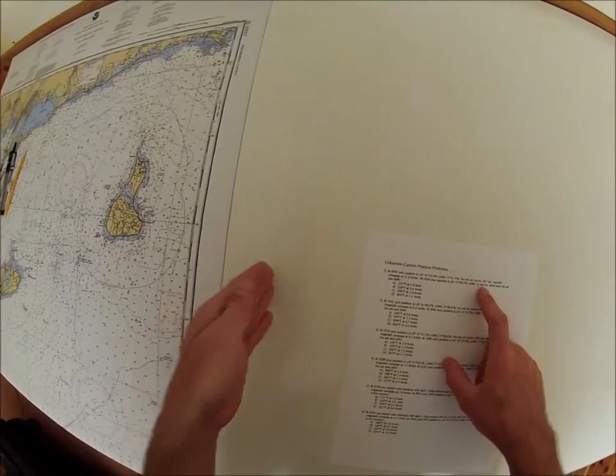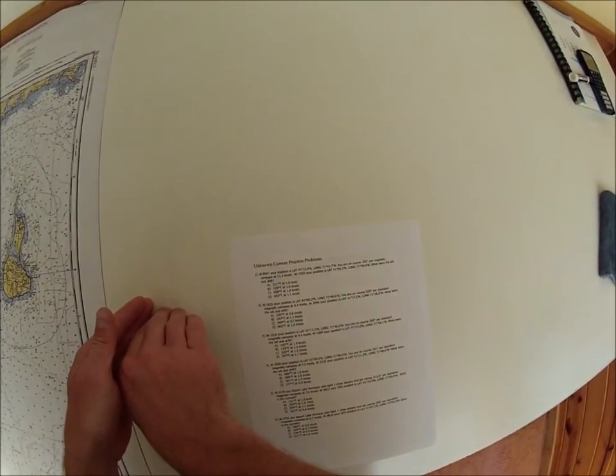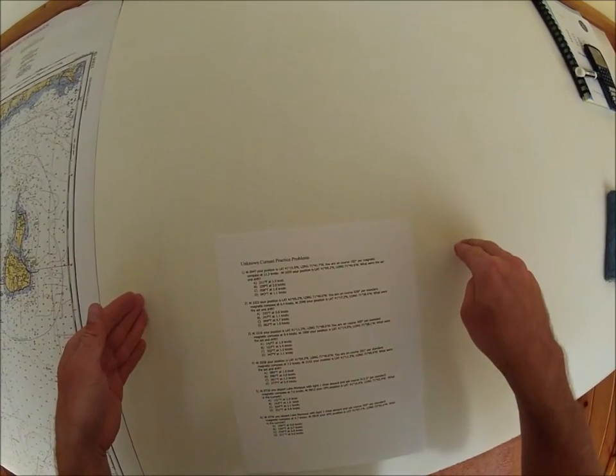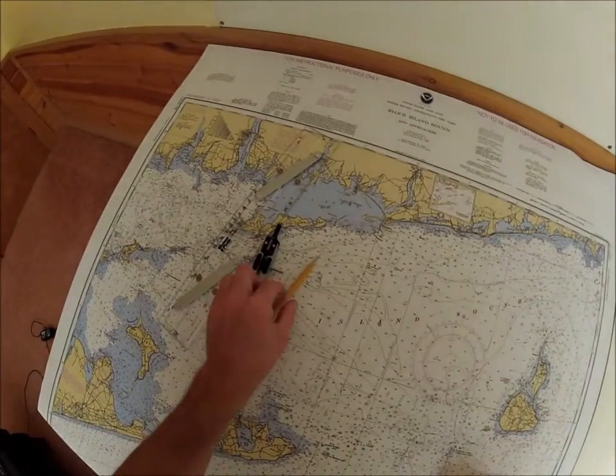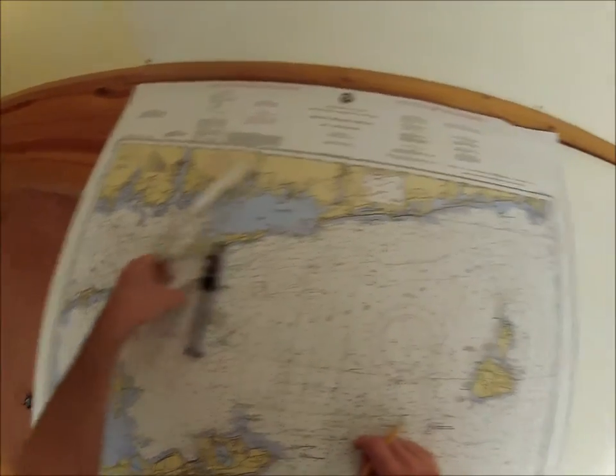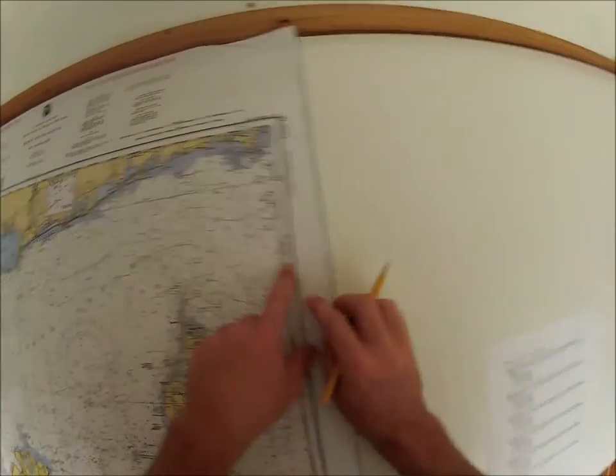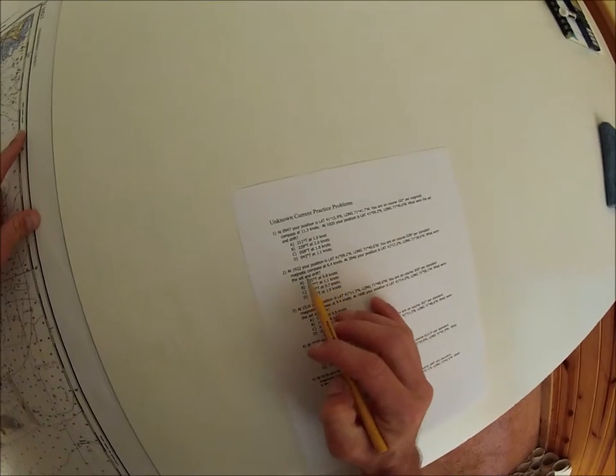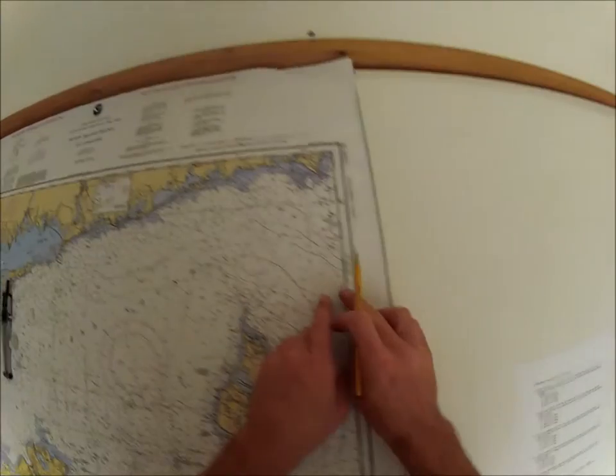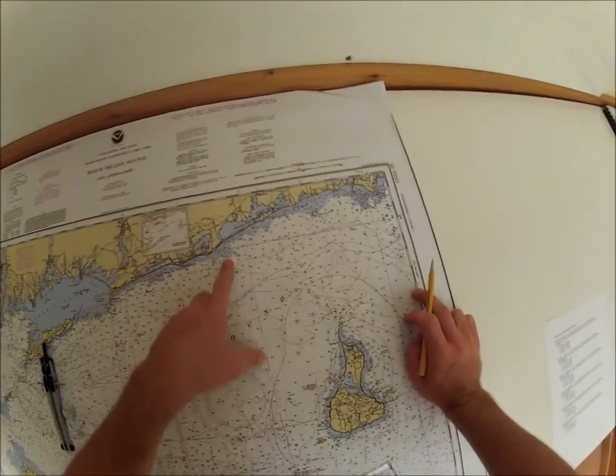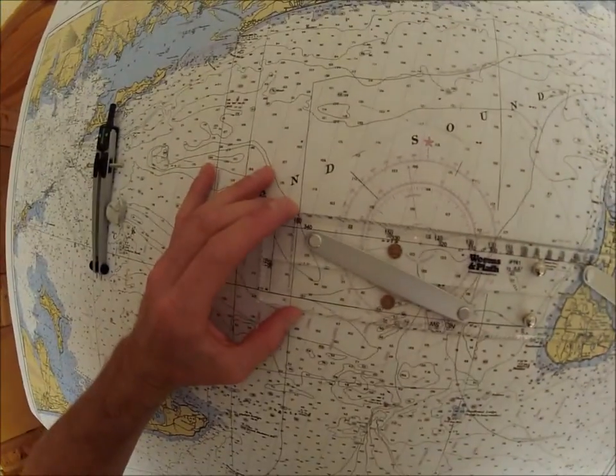So what we're gonna do is find the position you started, the position you ended, the course you think you're traveling and how far down that course, and then we'll get the set and drift from there. To find the starting position, 41 degrees 15.9 minutes.